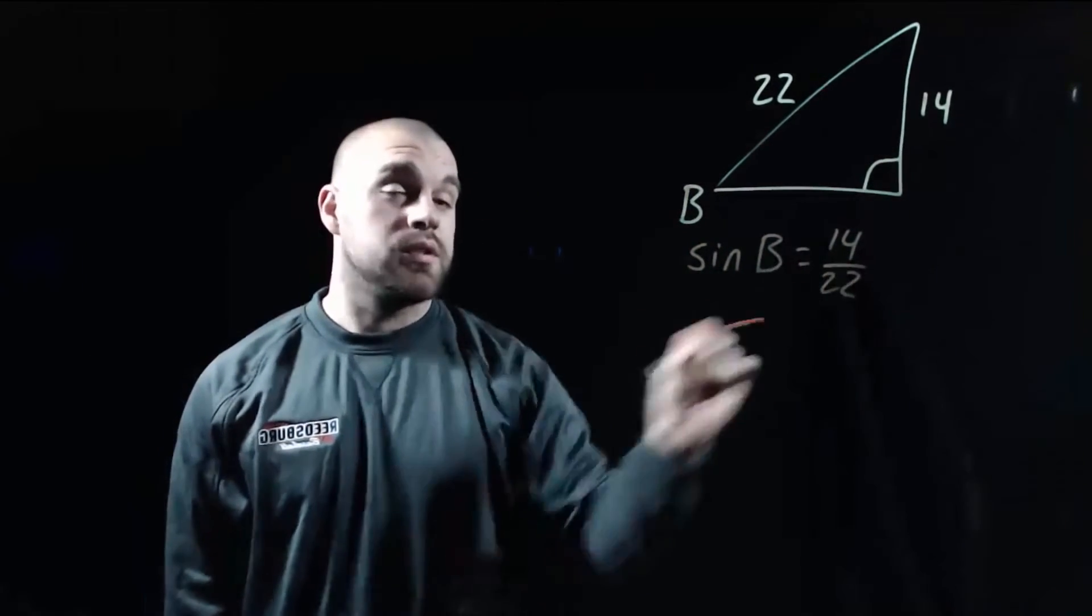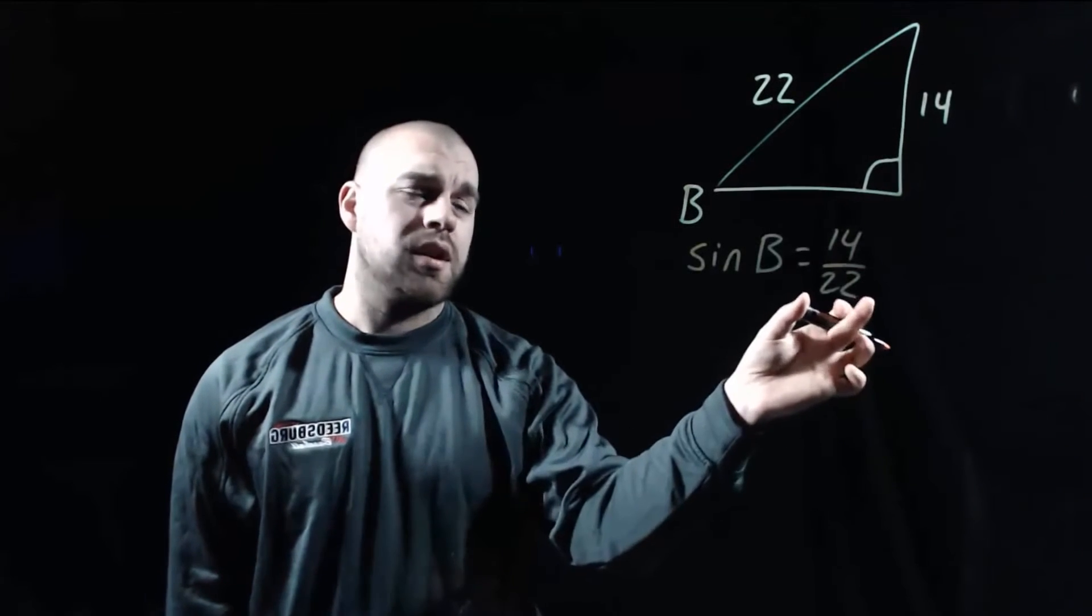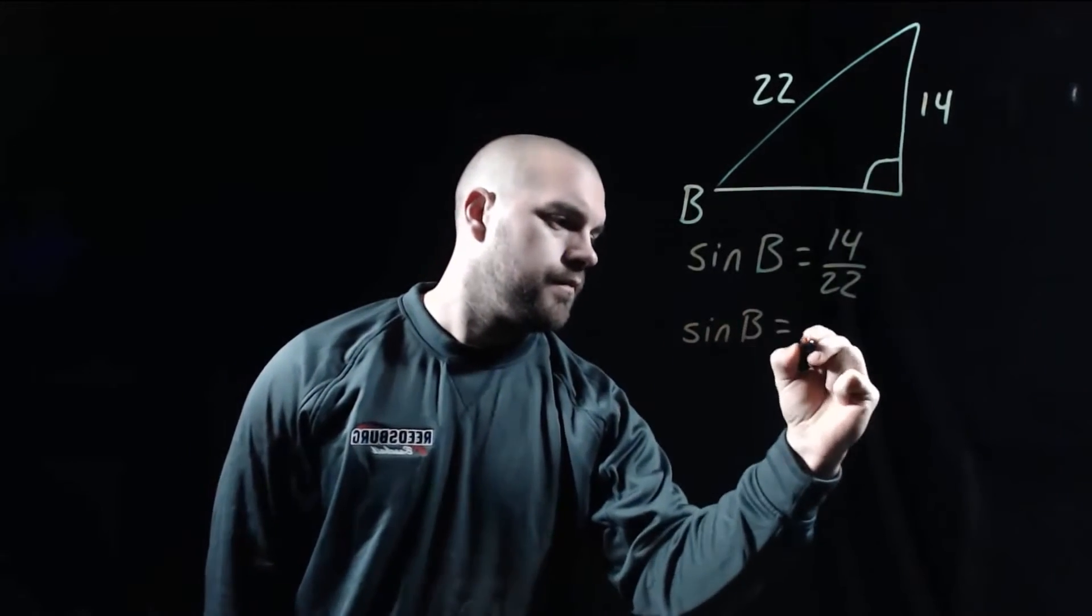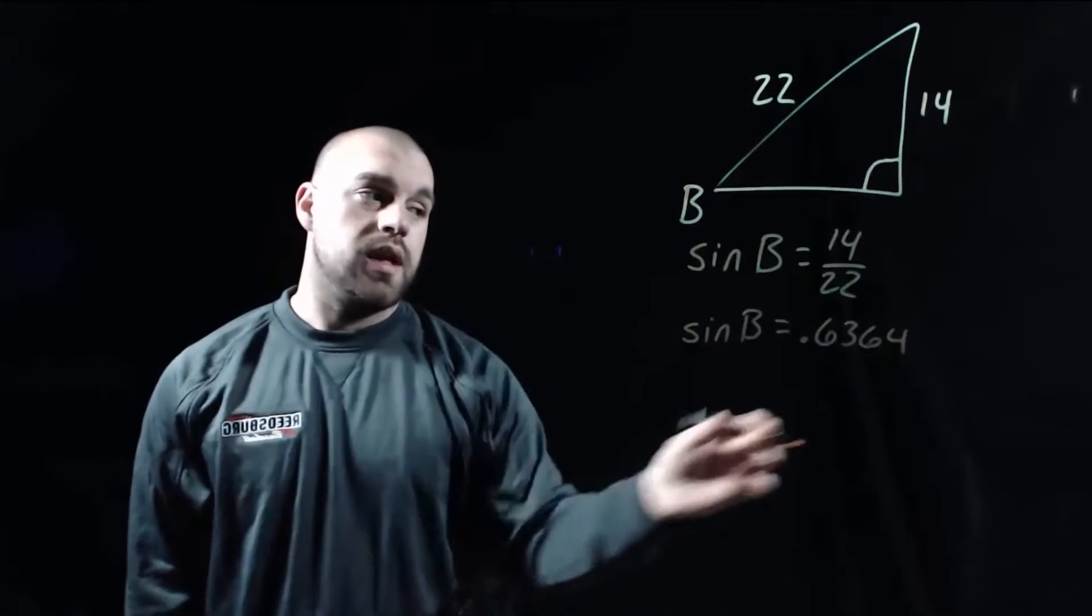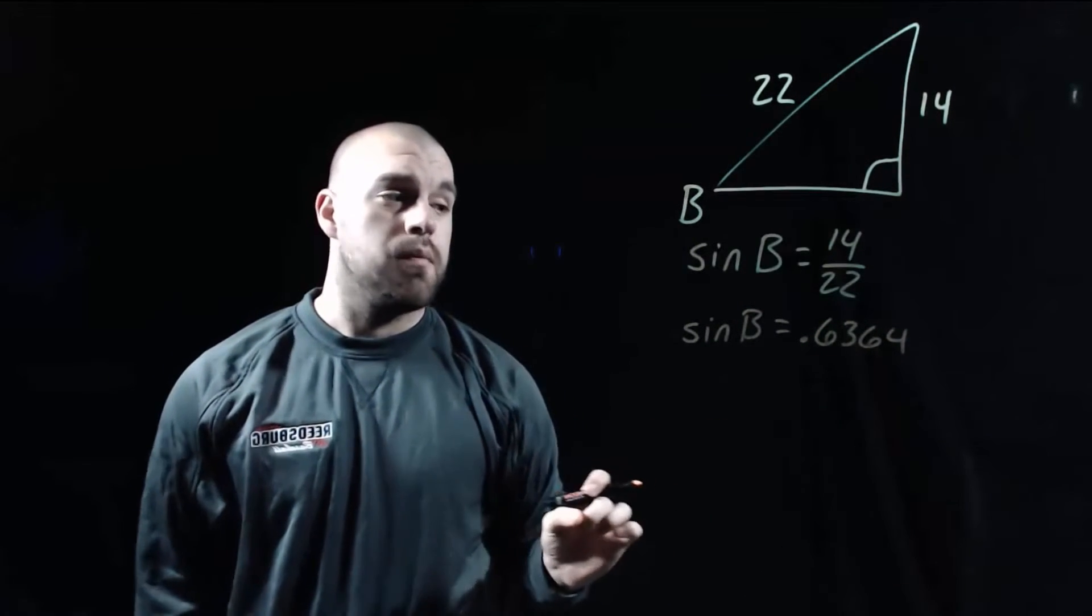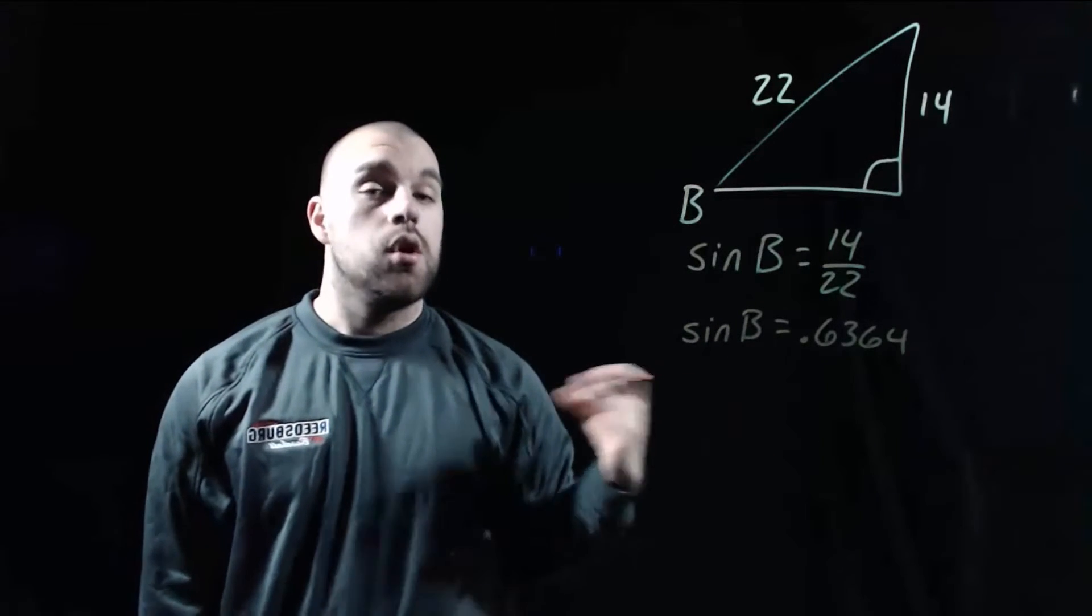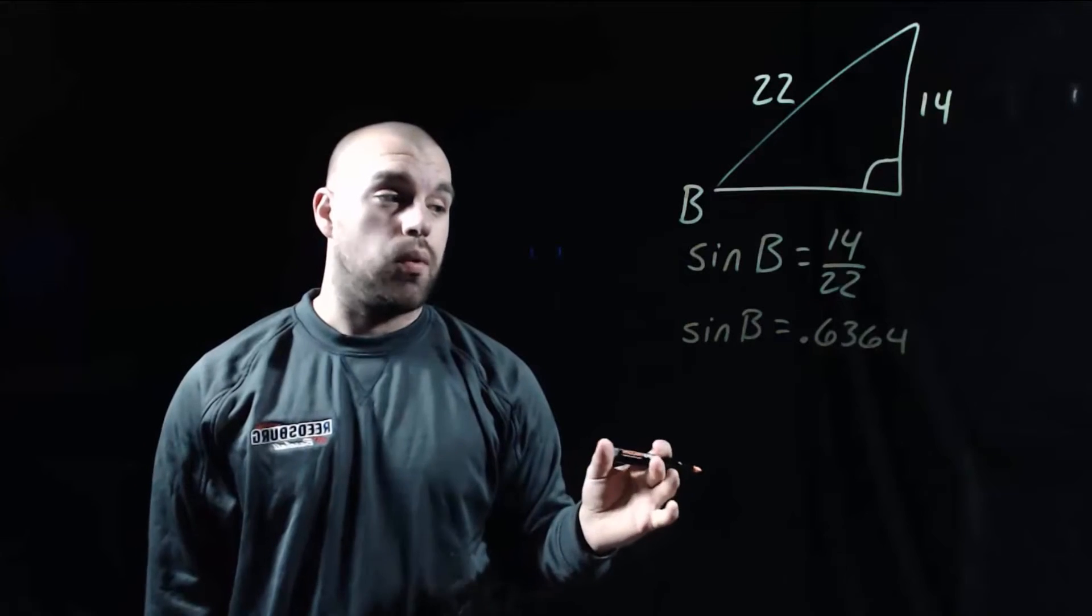So we get the sine of B equals 14 over 22. I'm going to divide 14 by 22 in my calculator. And when I do that, I get 0.6364. Now, since we're dealing with a sine equation, if we want to figure out how big angle B is, we're going to have to write out an inverse sine equation.